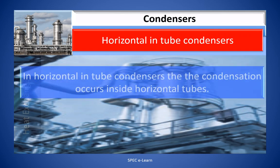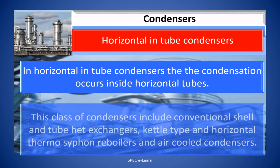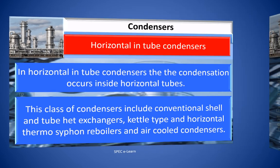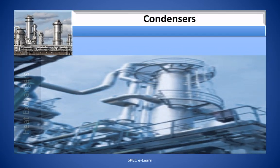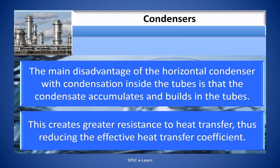In horizontal in-tube condensers, the condensation occurs inside horizontal tubes. This class of condensers includes conventional shell and tube heat exchangers, kettle type and horizontal thermosyphon reboilers, and air-cooled condensers. The main disadvantage is that condensate accumulates and builds up in the tubes, creating greater resistance to heat transfer and thus reducing the effective heat transfer coefficient.